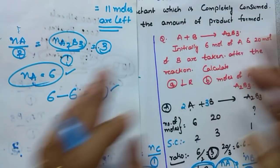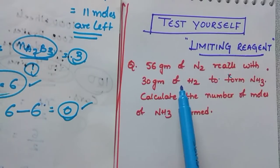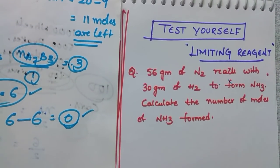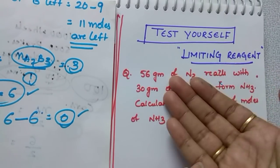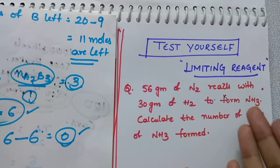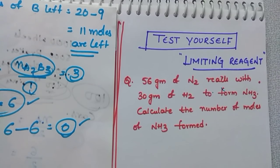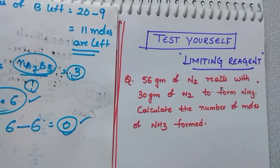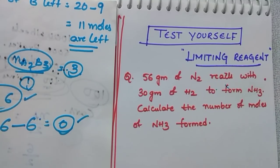Now it is time for a test yourself question. 56 grams of N2 reacts with 30 grams of H2 to form ammonia. Calculate the number of moles of ammonia formed during the reaction. First convert the given weights into number of moles, then write the balanced chemical equation, and using this trick solve the question and comment your answer. The answer link will be available in the description box. Thanks for watching — I hope you liked this video.